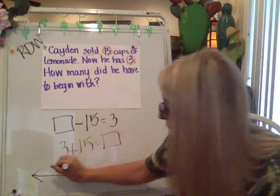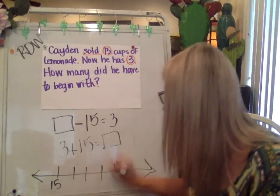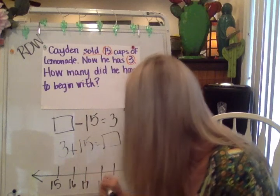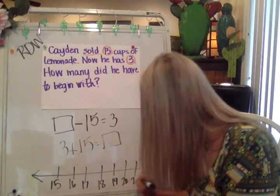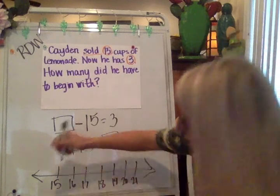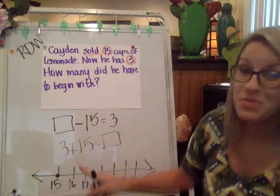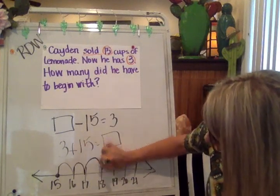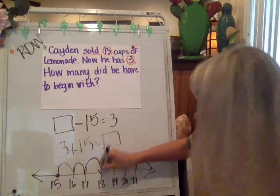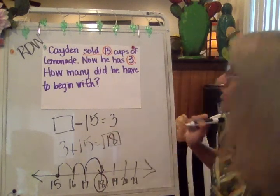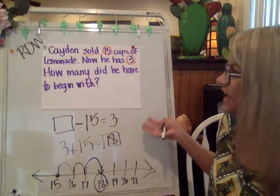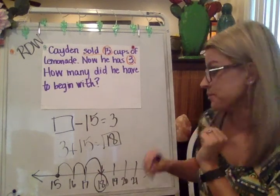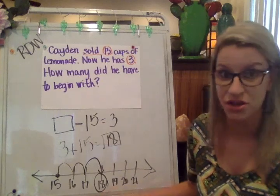If I think about an open number line and start at the number 15, then count up three spots — 15, 16, 17, 18 — my stop spot is on number 18. So Caden had 18 cups of lemonade before he sold them. There's more than one way to solve this. This is just the open number line if you wanted to remember how to do that.